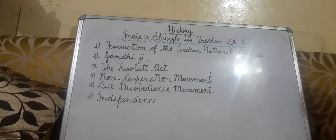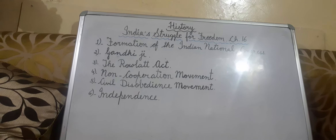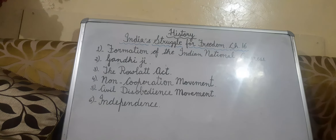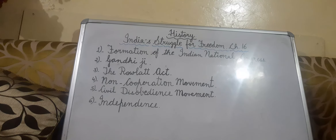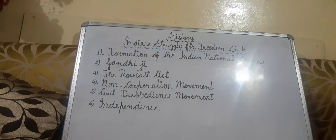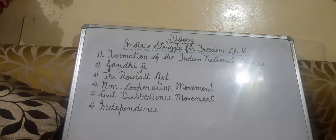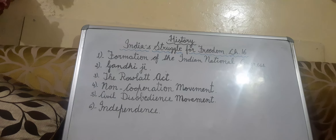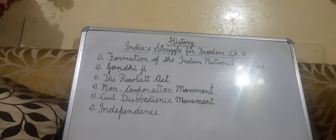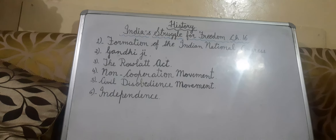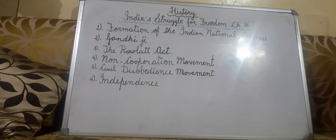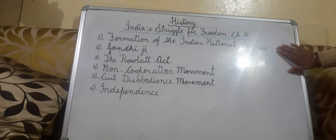The first meeting was held in Bombay, now called Mumbai. The aims of the Congress were to promote national unity, to organize public opinion, and to formulate popular demands.